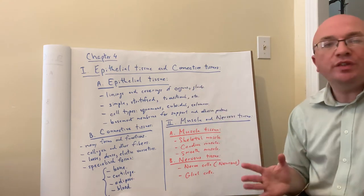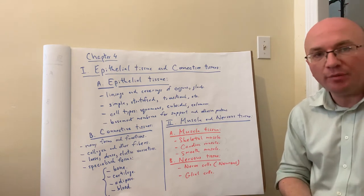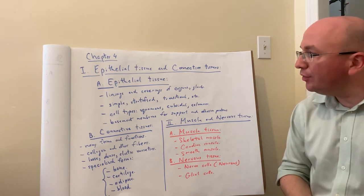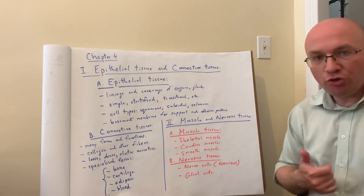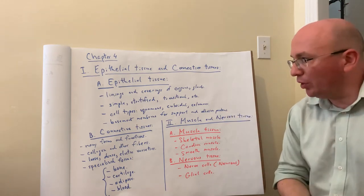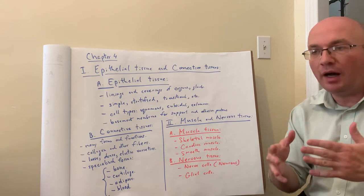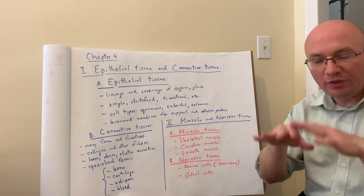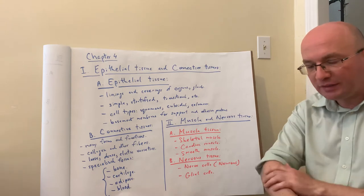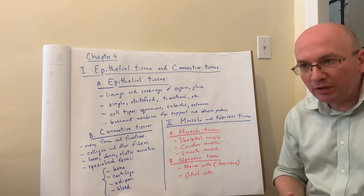We have epithelial tissues, connective tissue, muscle tissue, and nervous tissue. All of this is the domain of histology, which is the study of microscopic anatomy. When you think of epithelial tissue, you should be thinking of linings and coverings of organs. Every organ is either lined or covered by epithelial tissues or epithelium, whether internally or externally.